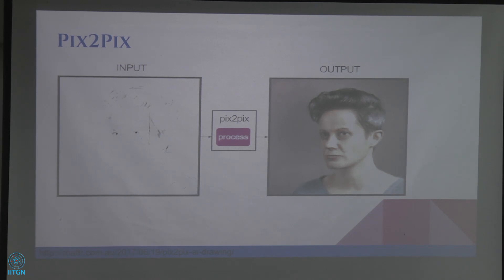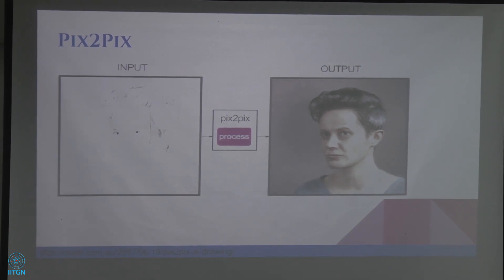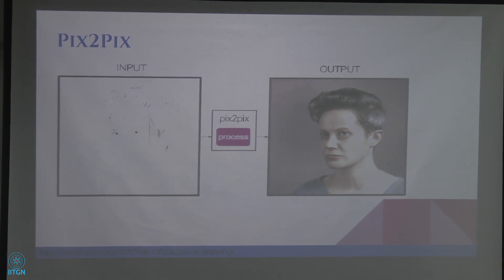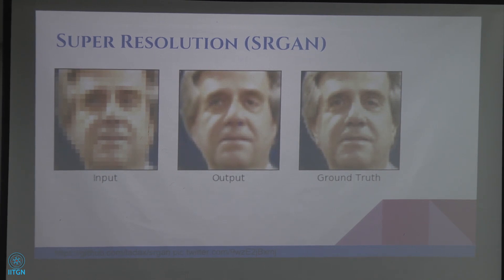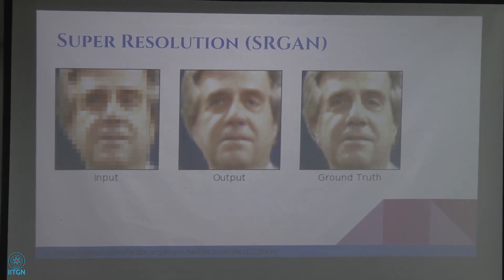Here are a few examples of GANs. The first is Pix2Pix — you have a very blurred sketch with hardly any features, but using those you can create an actual output which resembles the sketch from pixel to pixel. Super resolution is another application I have personally worked on during the summer. You have a very low resolution image and a high resolution ground truth image, and using GANs we have been able to reach quite close to the ground truth, even with very little information in the input. Fake values are generated to match the high resolution output.